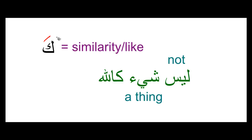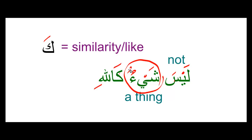Number three we have ka, and this kaaf shows similarity or likeness. So here we have laysa shay'un kallahi. Laysa means 'there is not,' shay'un means 'a thing,' kallahi means 'like God' — again, I added kasra because of the kaaf. The two dhammas on shay'un tell me it can be anything, not just one thing. So laysa shay'un kallahi: there is not anything like God.